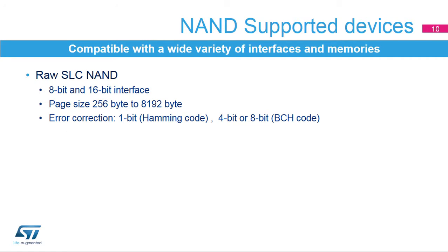The FMC also interfaces with NAND Flash memories and supports error code correction, or ECC, for up to 8 bytes of data read or written. Three interrupt sources can be configured to generate an interrupt when a rising edge, falling edge, or high level is detected on the NAND Flash Ready-Busy signal.